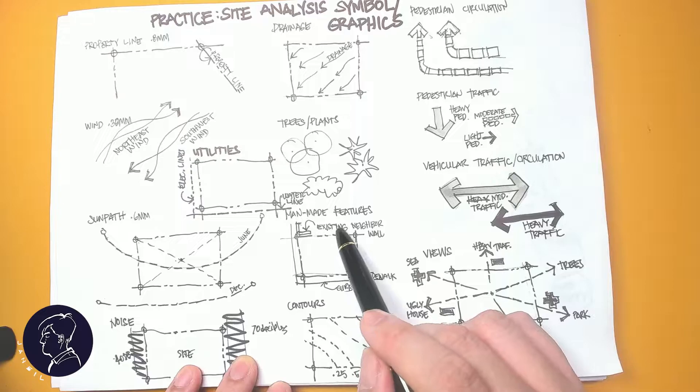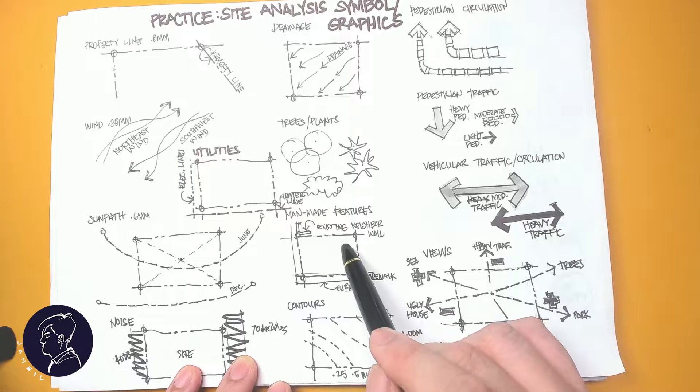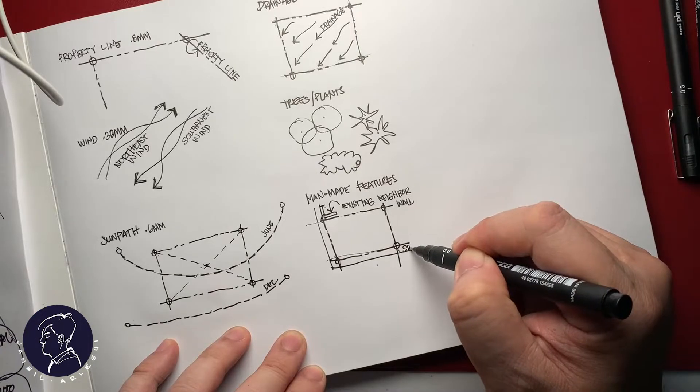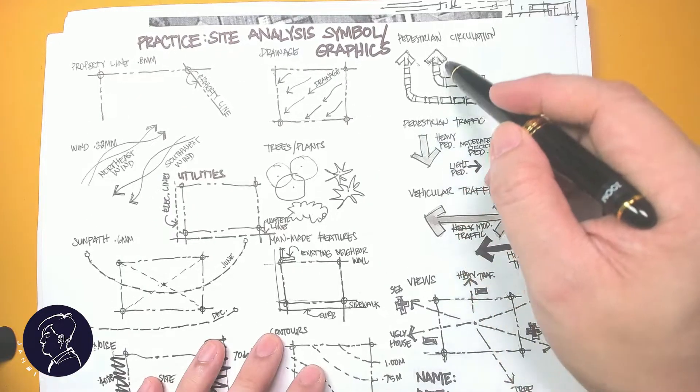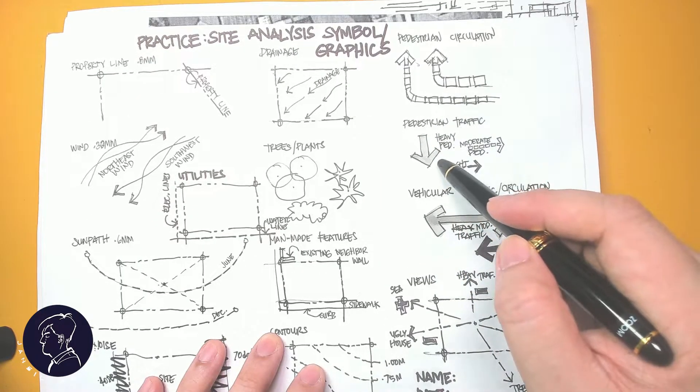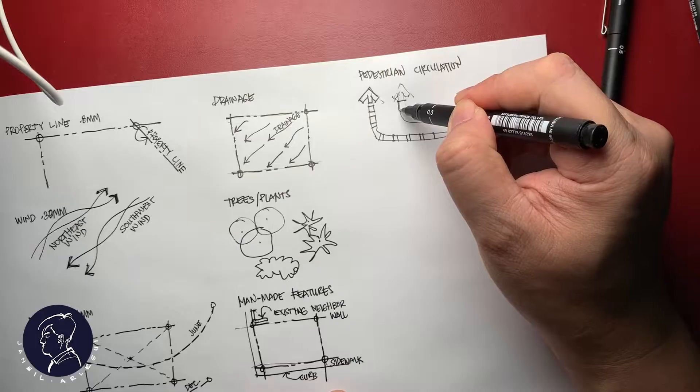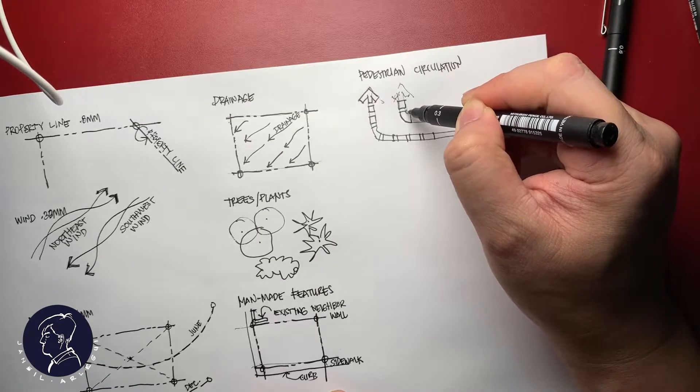Existing man-made features like the neighboring houses or existing firewalls could also be there. Like sidewalks, for example, you could annotate them, what these things are in your line drawings. Arrow symbols are different in every style. This is the style that is used for the pedestrian traffic or pedestrian circulation.